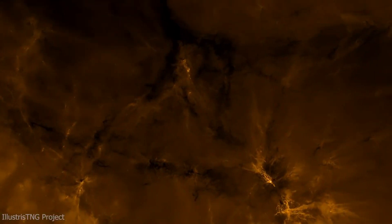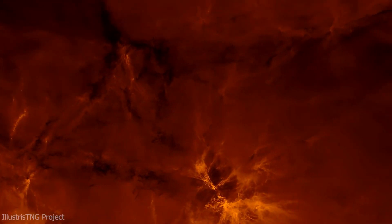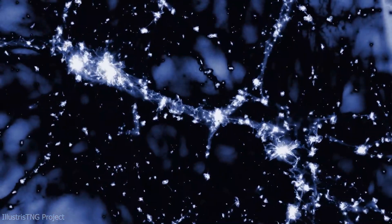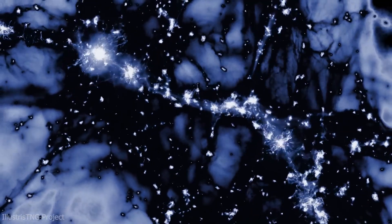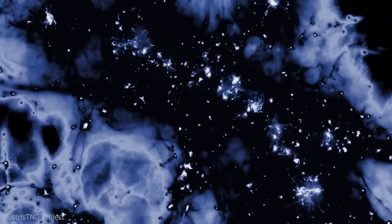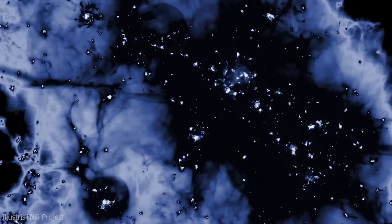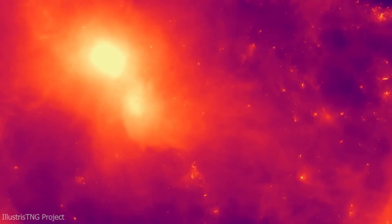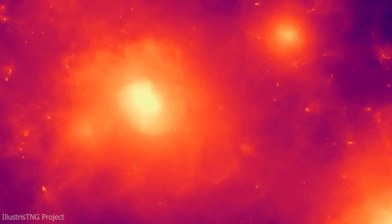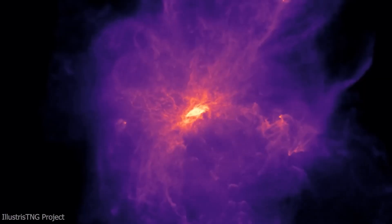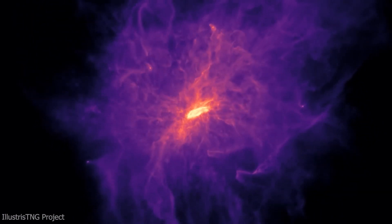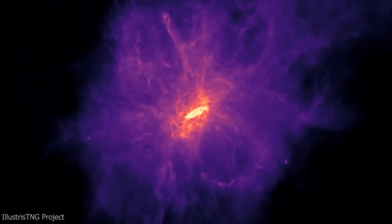Gravity played a starring role in this cosmic ballet. It's the force that pulls matter together, and in the early universe, it was working overtime. In regions with more matter, gravity was stronger, pulling in even more matter from surrounding areas. This process was gradual but relentless. Imagine a snowball rolling down a hill, gathering more snow as it goes. That's what was happening in the universe, but on an unimaginably vast scale.